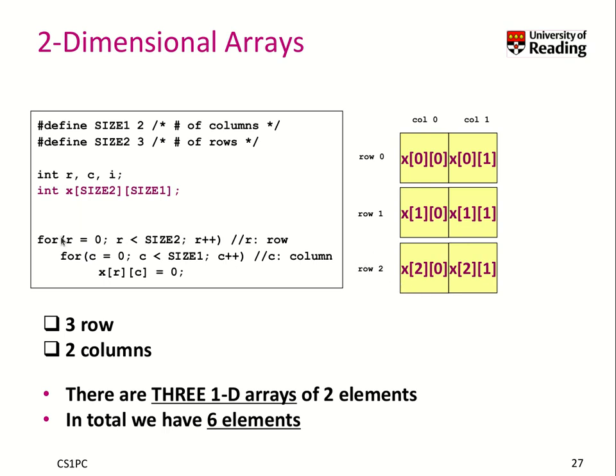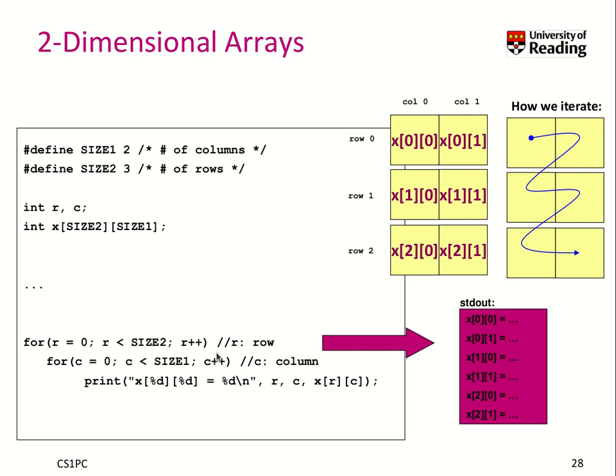And how would we iterate over it? Well, we have to now use two loops, one over the rows - row 0, row 1, row 2 - and one over the columns. And then we could, for example, initialize those values to be 0.